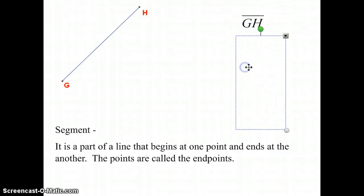For example, GH or HG. That's really the only name of this segment. Please note the symbol above is straight, unlike the line symbol which had arrows on the end. A segment does not.